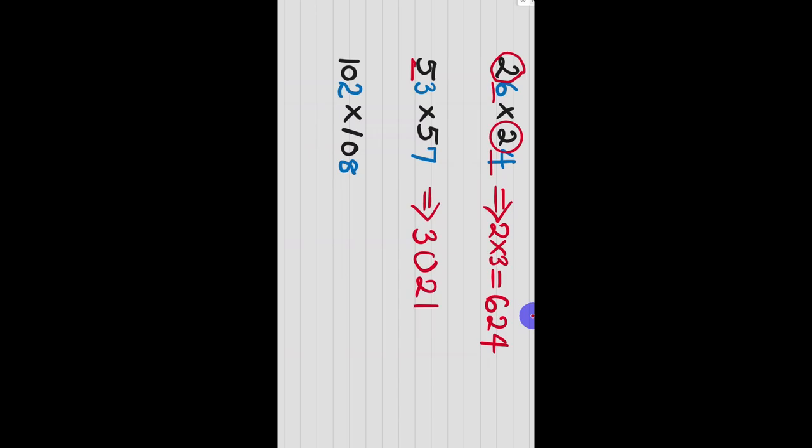For this, the next number after ten is eleven. Ten times eleven is one hundred ten. Two times eight is sixteen. Very easy trick to multiply.